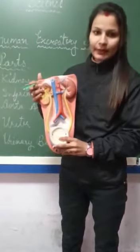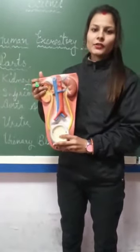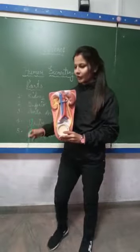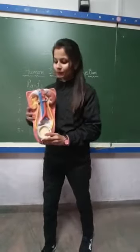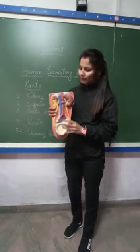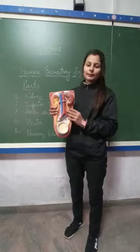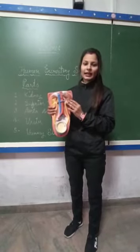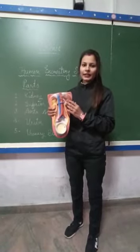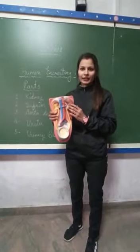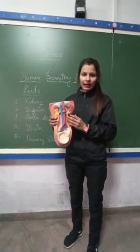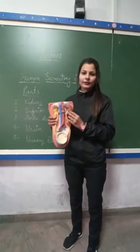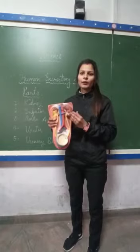So let's start the process of the excretory system through this model. So what happens? Firstly, the blood passes through the kidney and here it gets filtrated. The blood goes to the heart and the remaining waste material —